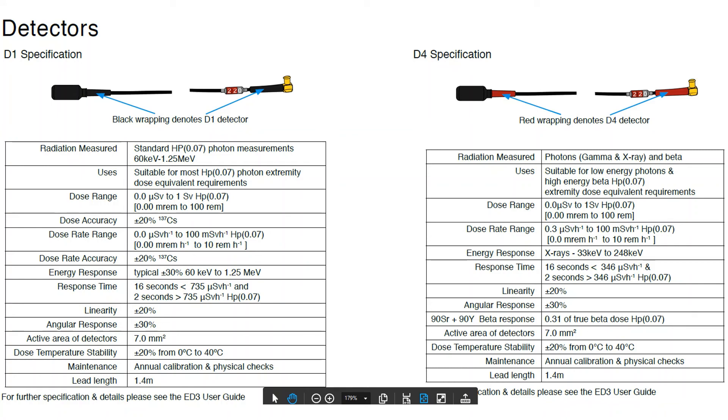On the D4 detector, the energy response is lower, down to 33 keV, and is also able to measure high energy betas, such as strontium, but because of its over-response, it does not stay within the IEC recommendations or requirements.